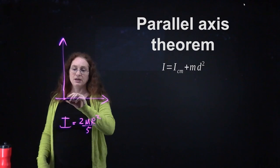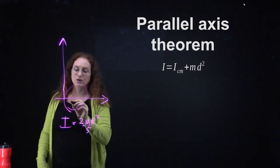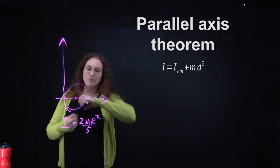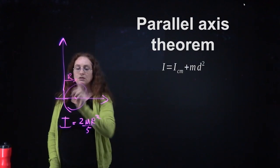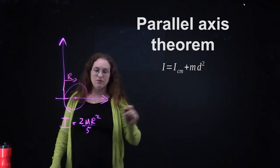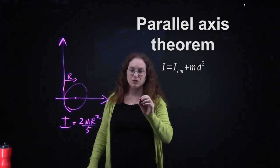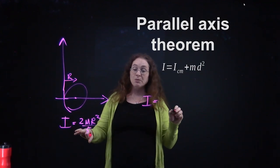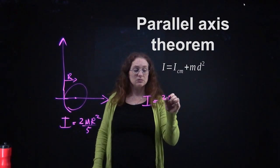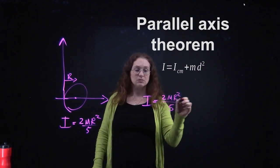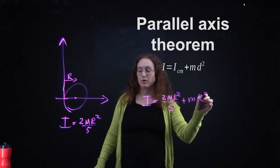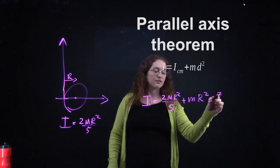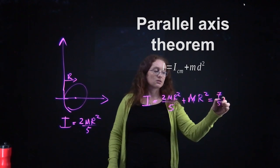Now, instead of rotating it about its center, I'm going to shift it so we rotate the sphere around a point not at its center. This is a distance r away from it, rotated on one of its ends. The moment of inertia about that point on the end is going to be the moment of inertia about the center of mass plus mr² — giving us 7/5 mr².